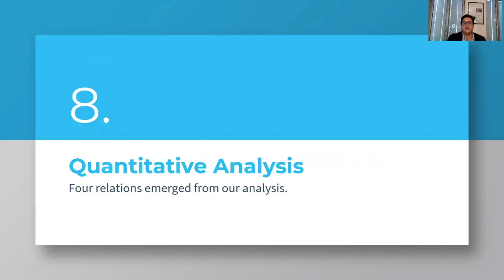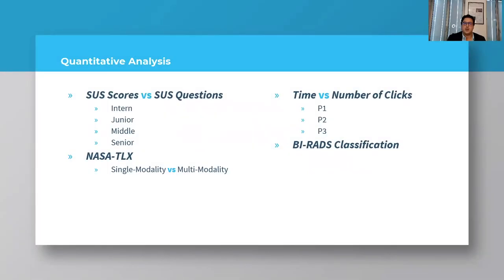Four relations emerged from our analysis. Here we used differences between SUS scores and SUS questions among clinical experience of intern, junior, middle, and seniors. The workload measurements of both single modality and multimodality. The relation between time and number of clicks clustering by patient: patient one, patient two, and patient three. Not forgetting that patient one is low, patient two is high, and patient three is medium. And accuracy of clinicians.